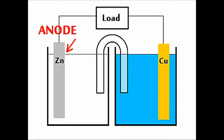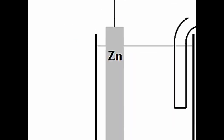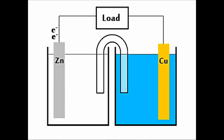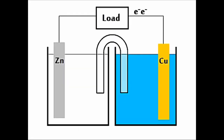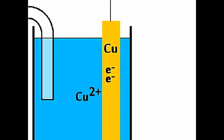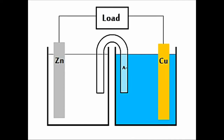We start at the anode. Electrons are lost there, and go through the wire, and through the load on fire. They enter the cathode, and reduce the cations, and the anions go through the salt bridge back to where?